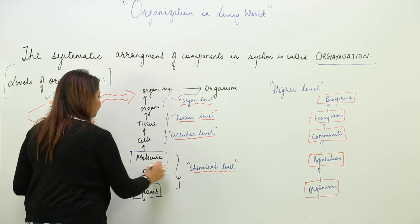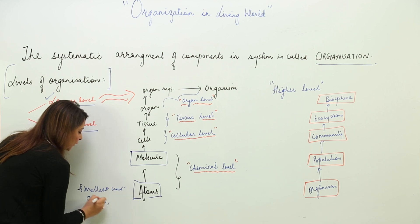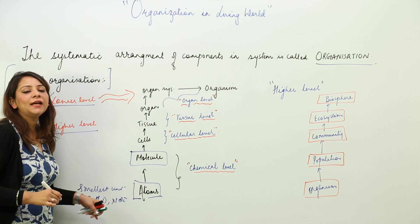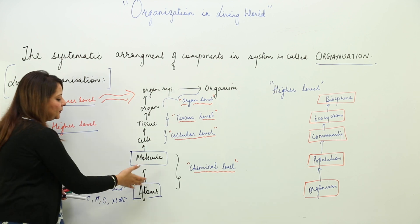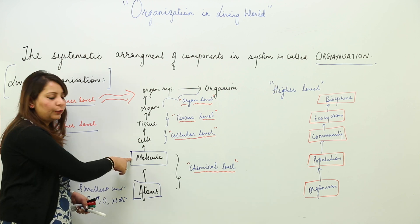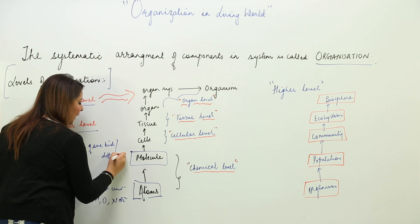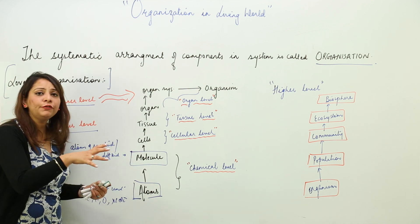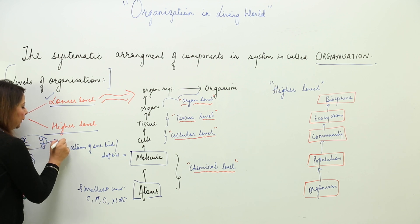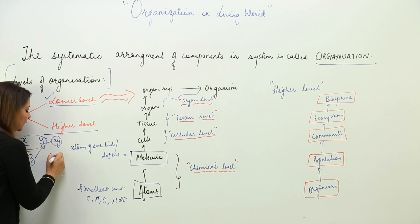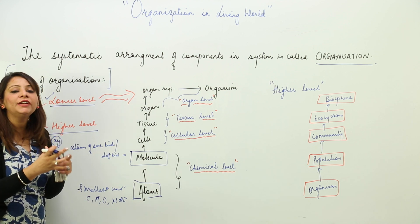Atom is the smallest unit — like carbon, hydrogen, oxygen, nitrogen, and many more. We will cover atoms in detail in a later class, but for now you should know what an atom is. When atoms of the same kind or different kinds combine, they give rise to a molecule. For example, if X atom and Y atom combine, they form molecule XY; if Z and Y combine, they form ZY.